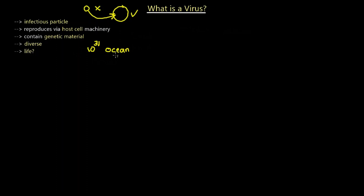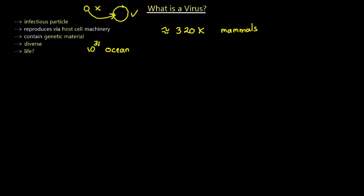Viruses have different types of genetic material — DNA or RNA, single-stranded or double-stranded — existing in oceans and affecting bacteria. As for viruses that infect mammals, there are an estimated 320,000 different viruses that infect mammals. We haven't discovered all of them; they're being discovered on a yearly basis.